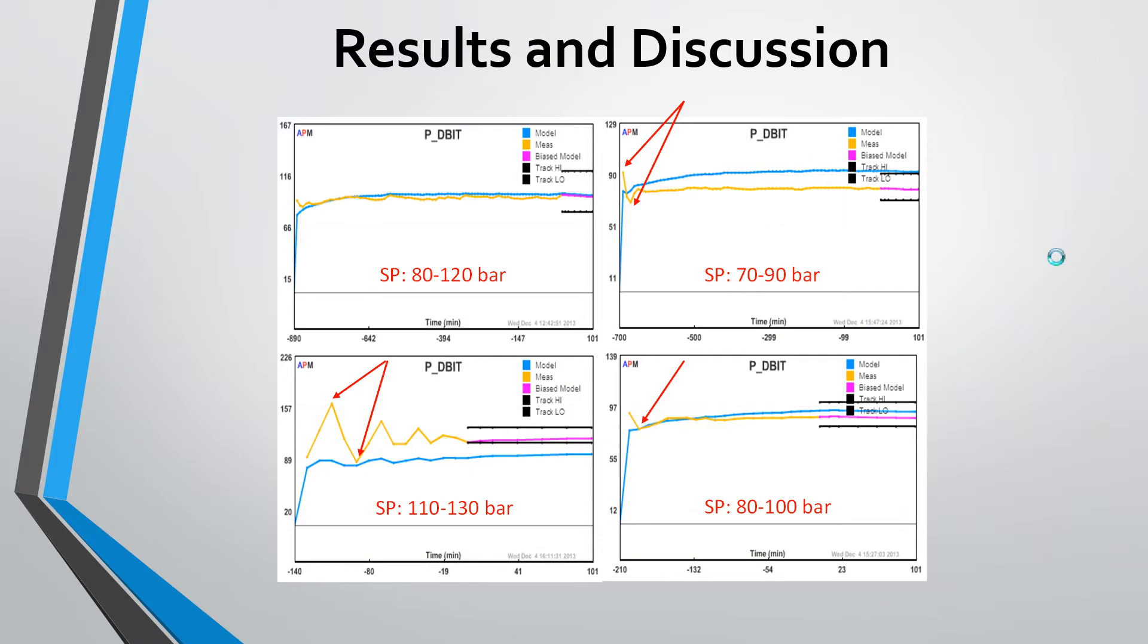Here are the results that we got from running our controller, which worked very well. The black lines here in each figure are the dead band, and the blue line shows what the model predicts is going to happen. The yellow line is what's actually happening, and the pink line is the bias between the two. This top left figure here is our base case with the set point of 80 to 120 bar. You can see that the controller worked very well. It follows the model and then it stays within our dead band.